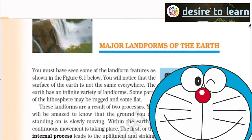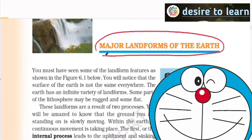Let's take up the next important chapter, that is, major landforms of the earth. As you are all aware, we have mountains, plateaus, plains and many other structures present on the earth, mainly because of internal processes called as endogenic and external processes called as exogenic.